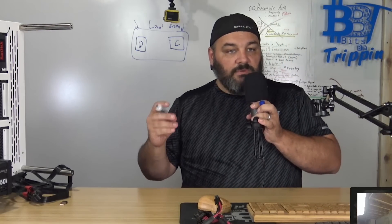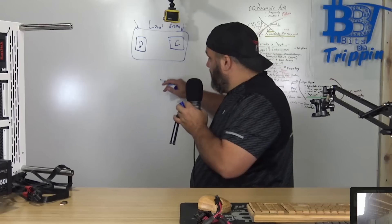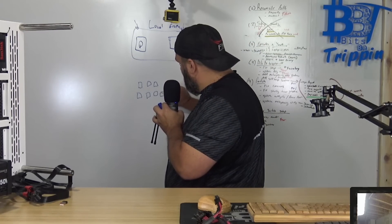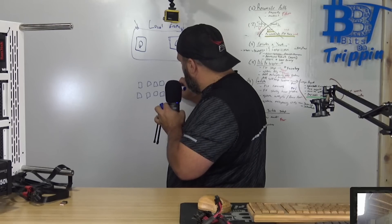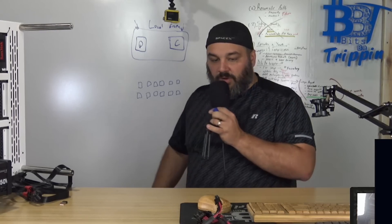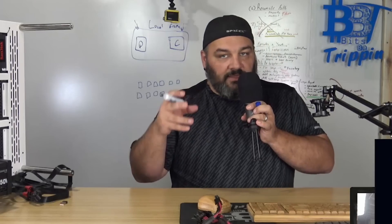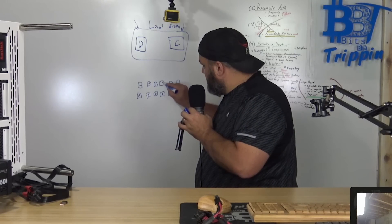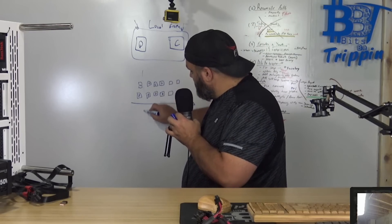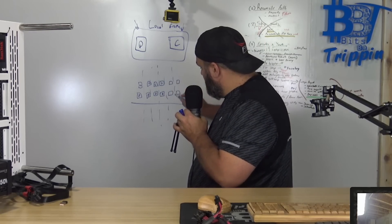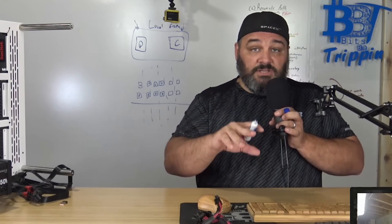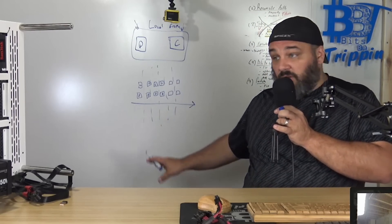What blockchain comes in and does is take those data and compute components - compute really coming down to smart contracts on Ethereum, EOS, and any platform coin using an EVM, an Ethereum Virtual Machine. It takes data and compute and puts it over a time series, executing operations which are transactions of information that change state.